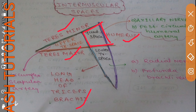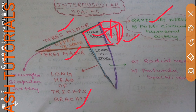The structures passing through the quadrangular space are two: first, the axillary nerve, which supplies the deltoid — it comes out and supplies to the deltoid. The second is the posterior circumflex humeral artery, which passes along the posterior surface of the humerus.